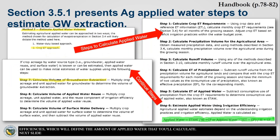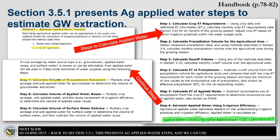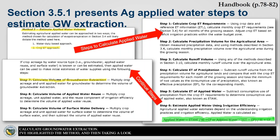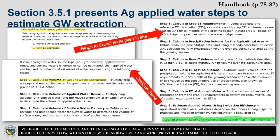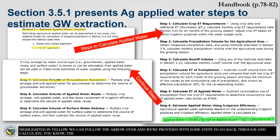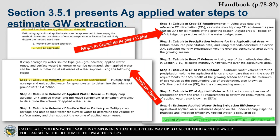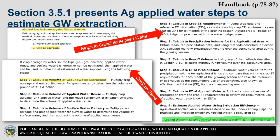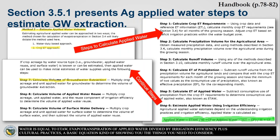Going back to section 3.5.1, this presents Ag Applied Water Steps, which we can use to calculate groundwater extraction. Looking at the crop ET approach, following the steps provided allows us to calculate the various components that build toward calculating applied water. At step six, we get the equation: applied water equals ETAW (evapotranspiration of applied water) divided by irrigation efficiency, plus cultural practices. Following through to step seven, you can calculate the volume of groundwater extraction based on that equation.